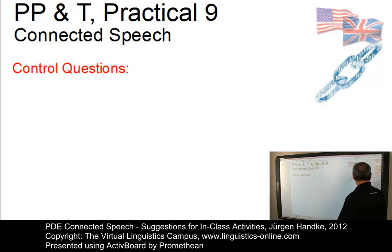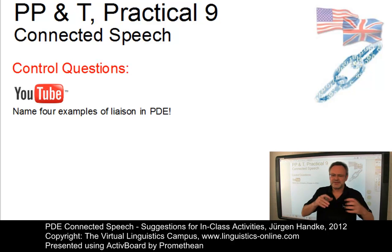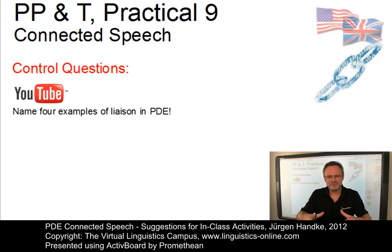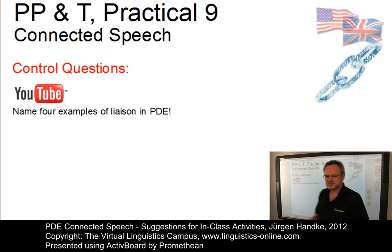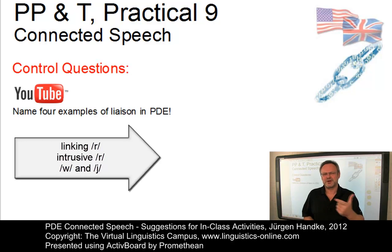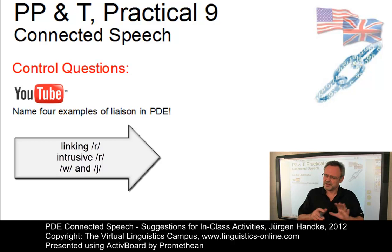The first control question concerns the e-lectures. Our e-lectures and the VLC content is structured so that the e-lecture says a little bit more about the content, while the VLC contains aspects not mentioned in the e-lecture — this combination guarantees students have to access both. Here's the e-lecture question: Name four examples of liaison in present-day English. Students should come up with the linking R, the intrusive R, the labio-velar approximant, and the palatal approximant as linking elements in connected speech in English.